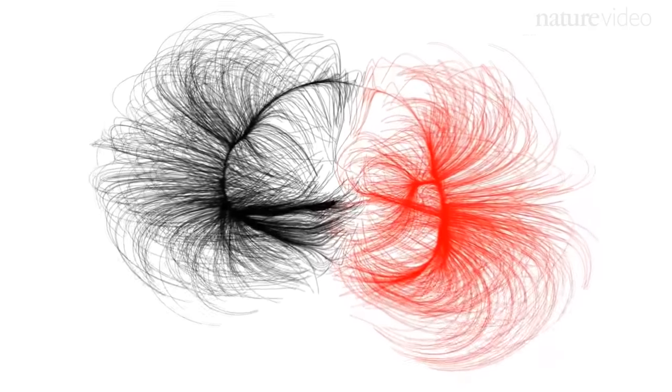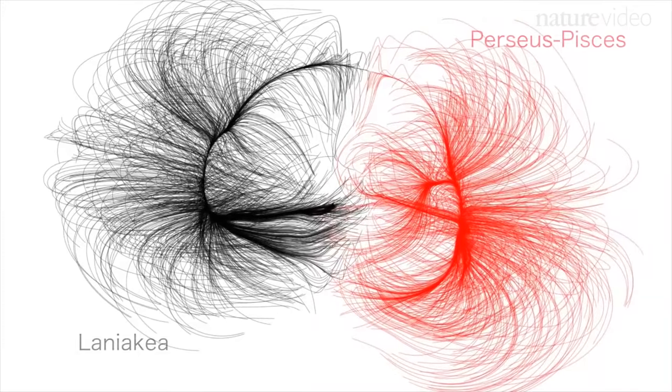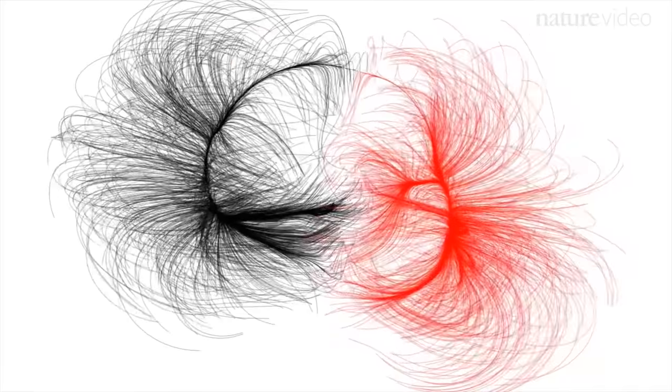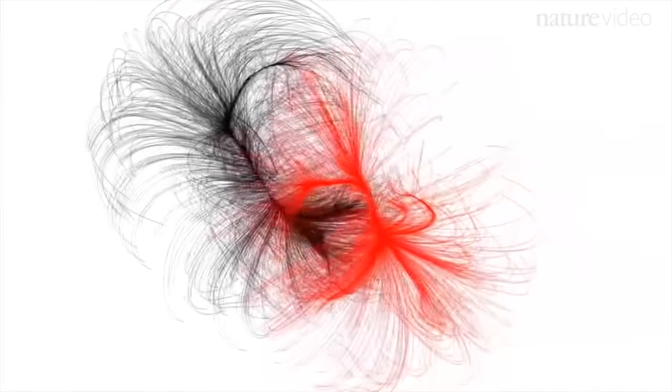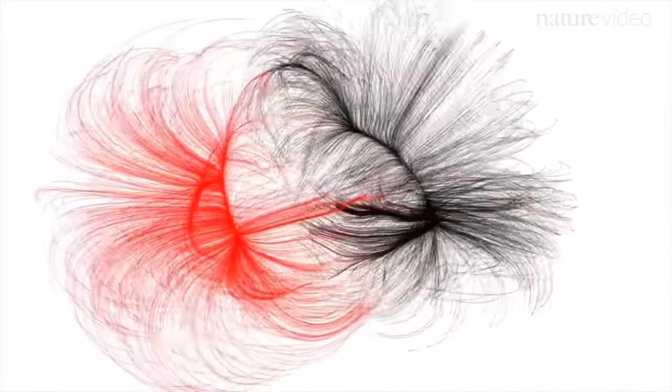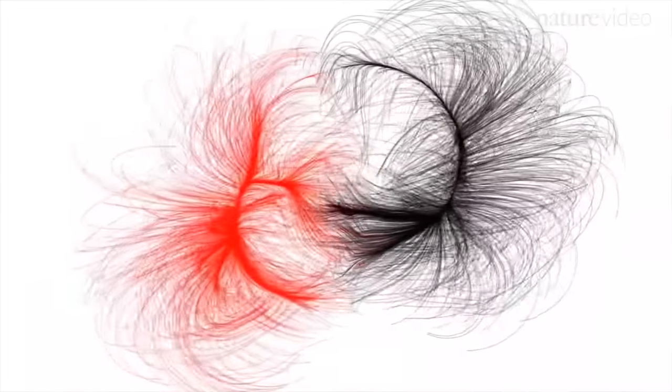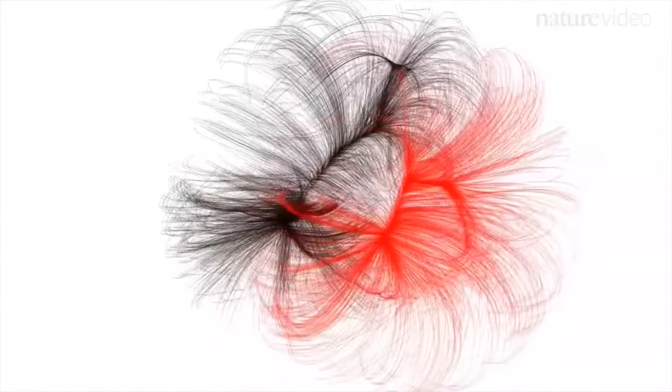Here is an illustration of Laniakea, along with Perseus Pisces, an adjacent supercluster. The boundary is where the supercluster objects are shearing apart, like the North American Great Divide separates water flowing to the Atlantic Ocean from water flowing to the Pacific Ocean.